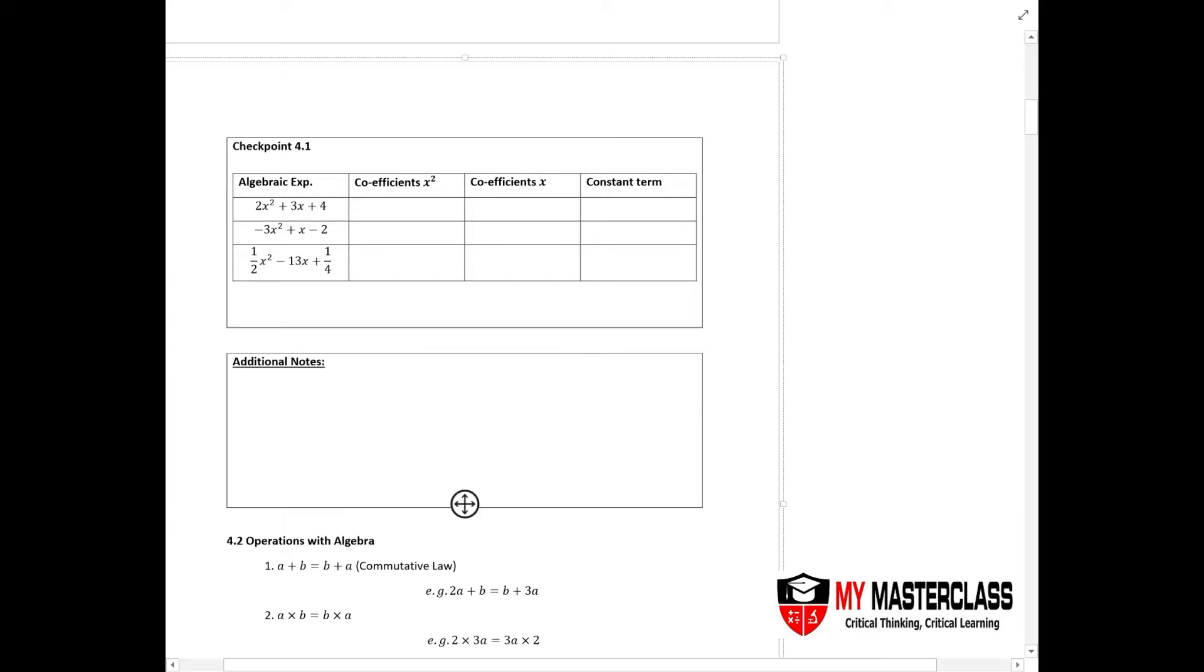What does coefficient of x² mean? It basically means the number that is right before x². If that's it, I will put a highlighter. It means the 2 here.